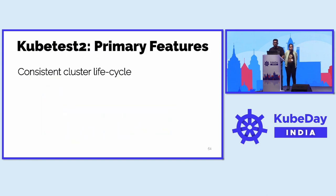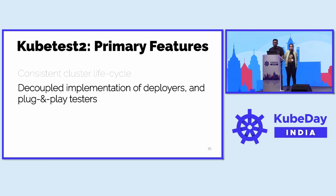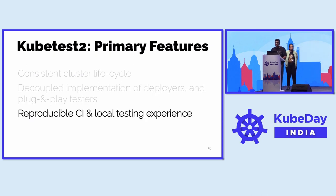The primary features of kubetest2 are: a consistent cluster lifecycle — we know how to consistently pull any kind of cluster up and down; decoupled implementation of deployers — you can have multiple deployers and multiple testers and mix and match them; and a reproducible CI and local testing experience, where the stuff running on your CI/CD system can also be simulated on your local machine by getting kubetest2, your tester, and your deployer down locally.